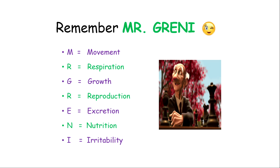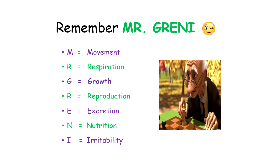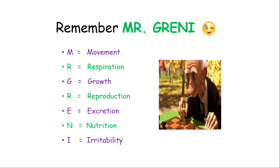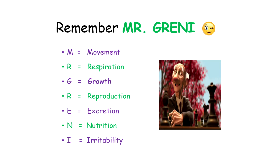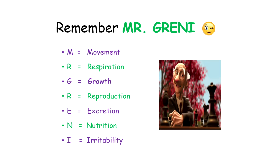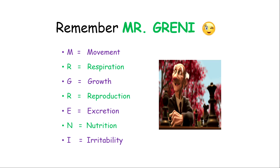The first thing I want you to remember is MR GRANNY — your friend through this lesson. MR GRANNY helps us remember the seven characteristics: M is for Movement, R is for Respiration, G is for Growth, the second R is for Reproduction — note there are two R's — E is for Excretion, N is for Nutrition, and I is for Irritability.